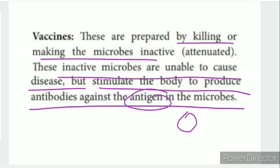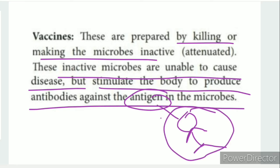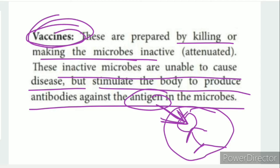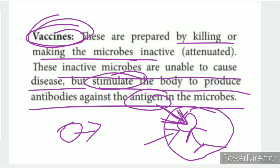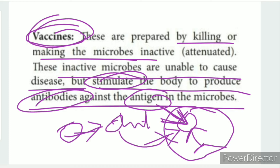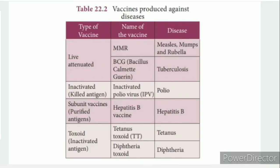When a vaccine is introduced, it carries antigens. The body then uses the antigen to stimulate the production of antibodies. This is the mechanism by which vaccines provide immunity — the vaccine acts as a direct antigen to stimulate antibody production.